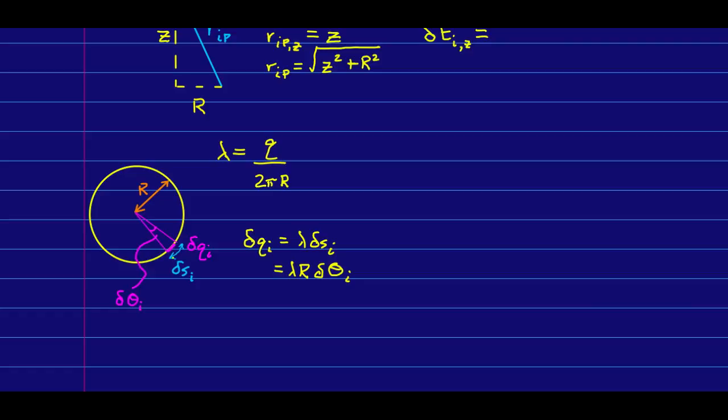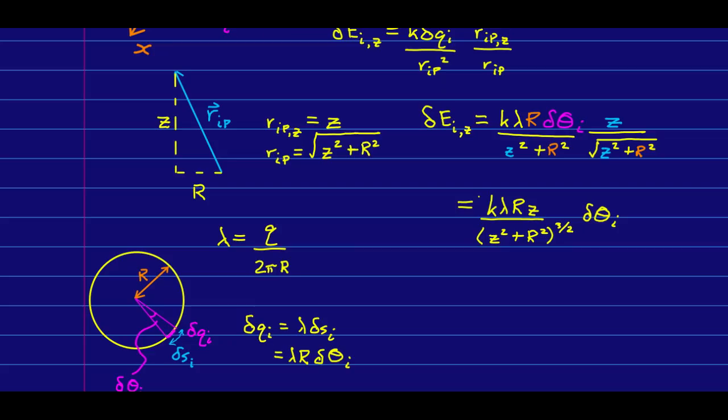And now, if we think of each piece as having some little arc length, delta s_i, and it's subtended by some angle that we could call delta theta_i, then the charge is just the linear charge density times the arc length. And that's just this. So, we can put all these pieces together and get this expression for the E field due to one bit of the rod.